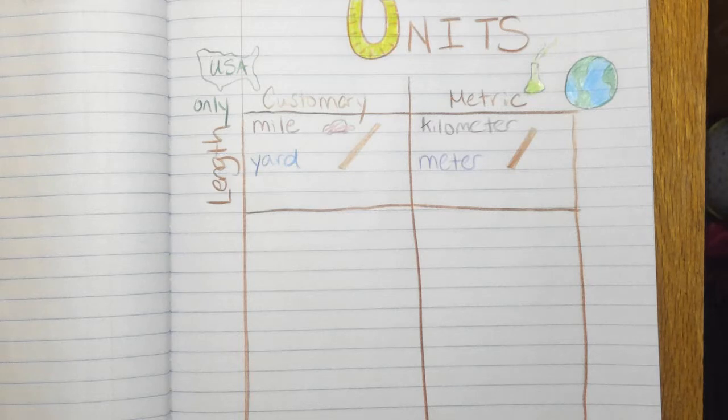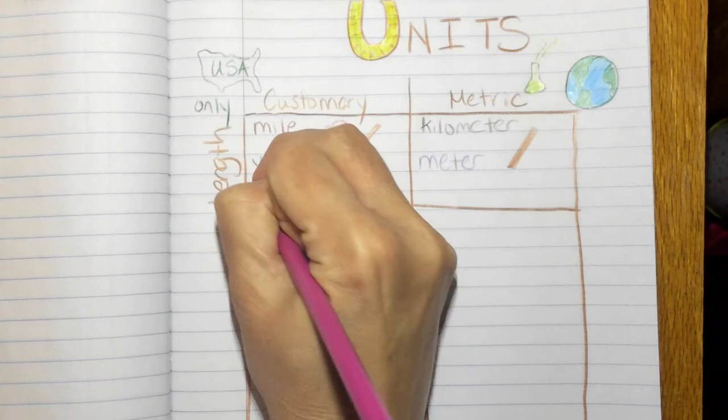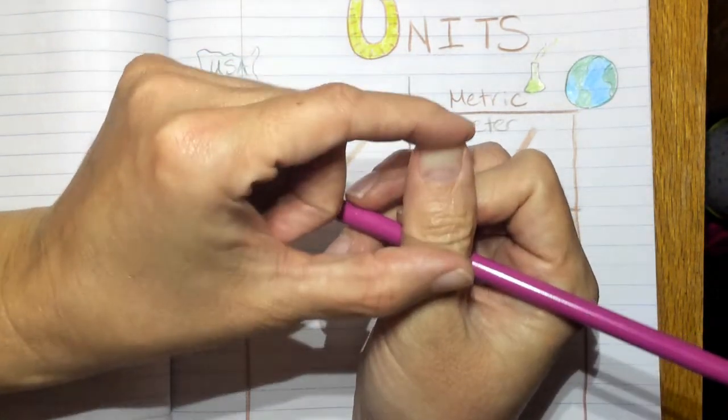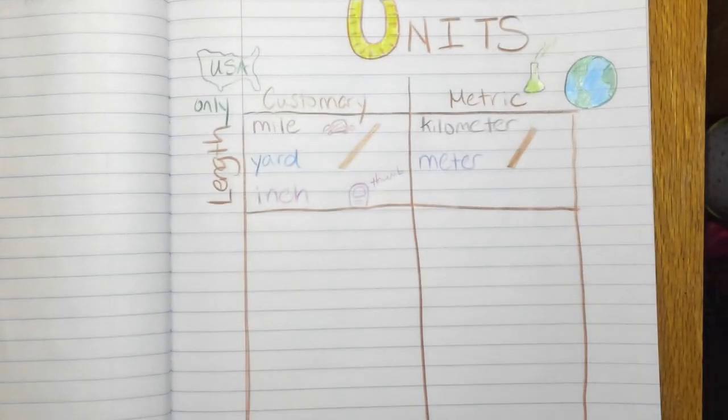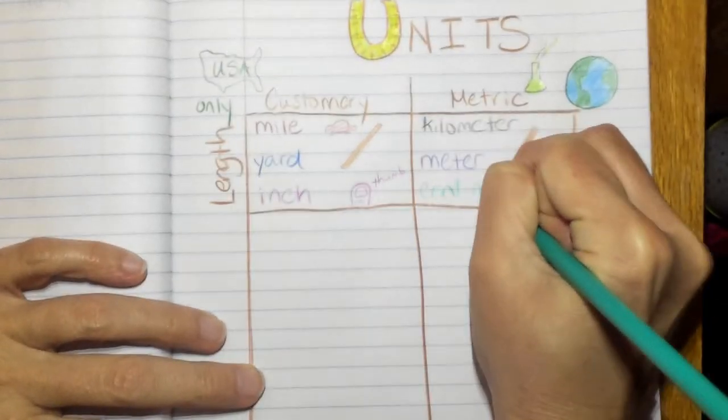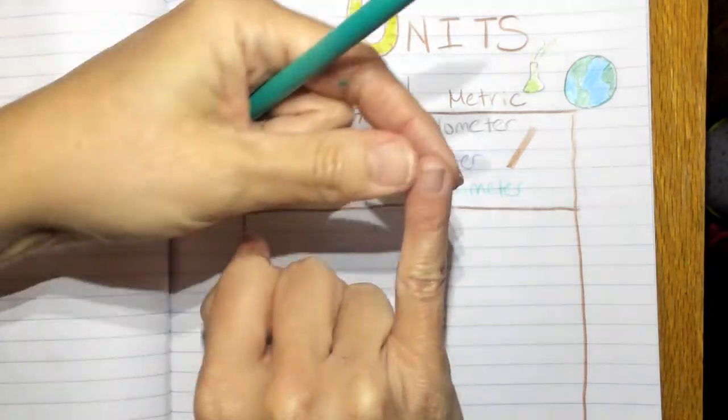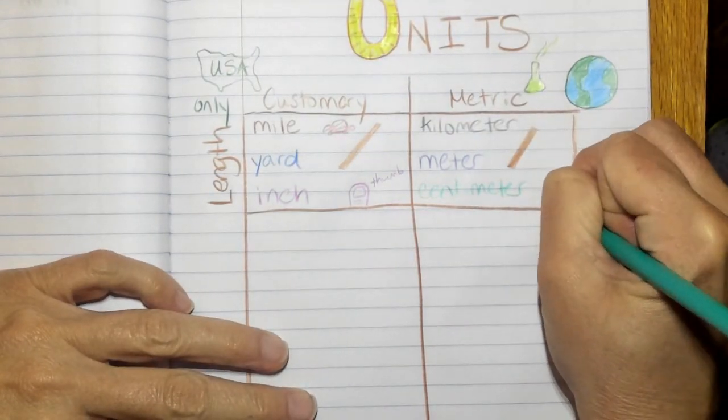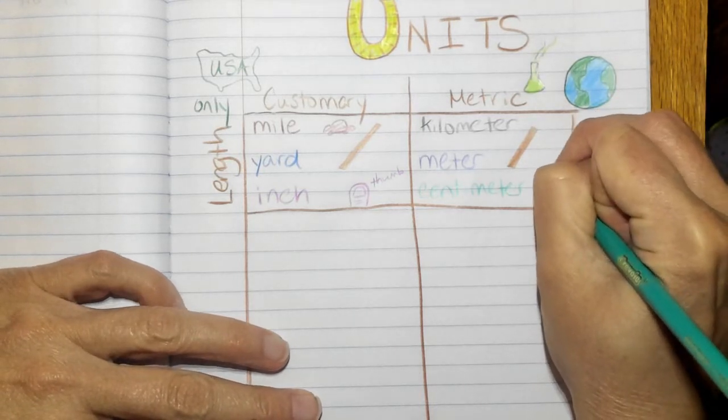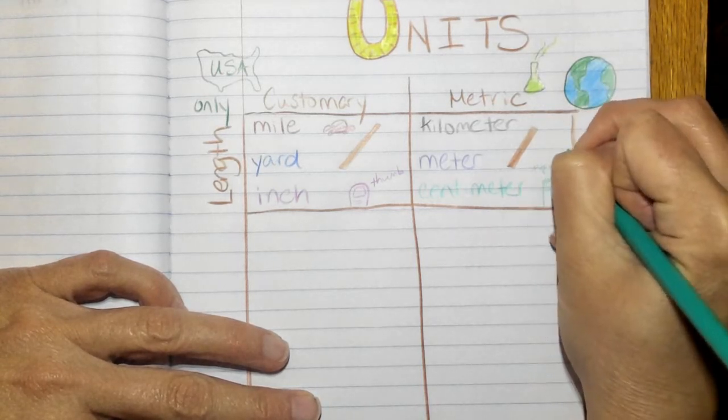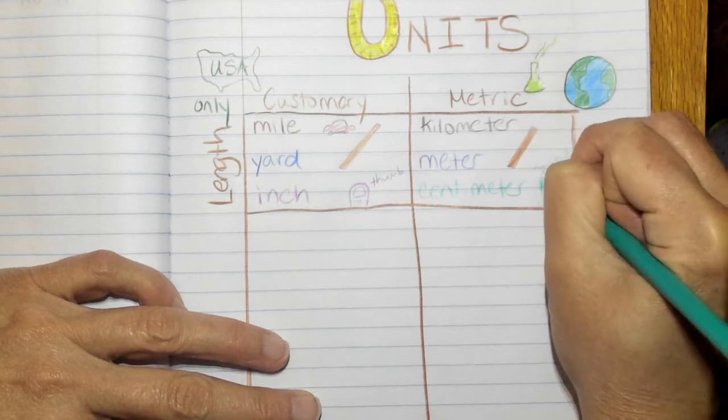And then we also have inches. So an inch is about this long, about like your thumb from knuckle to tip. And then on the metric side you have a centimeter. And how long is a centimeter? Well it's about the width of your pinky. So it's your thumb from knuckle to tip and it's the width of your pinky. So inch, centimeter.